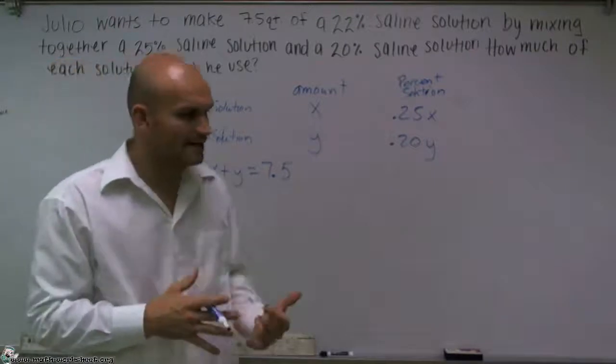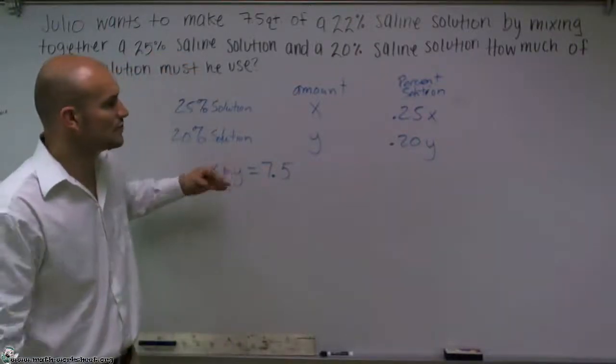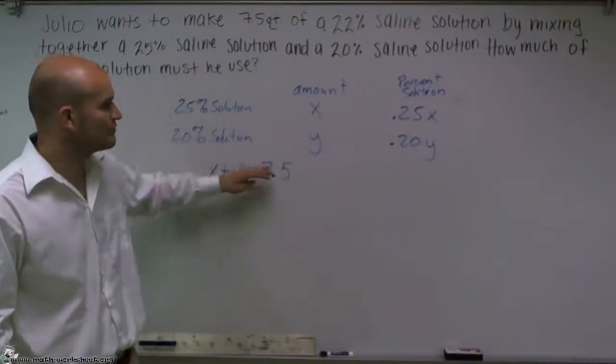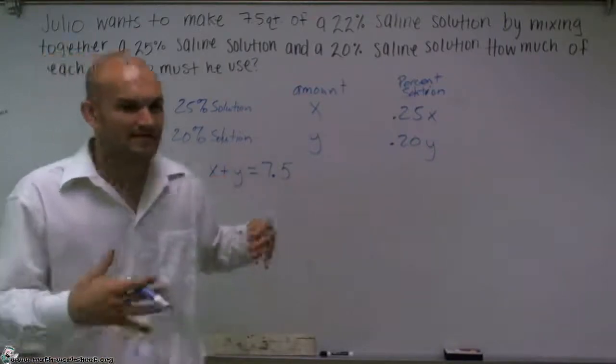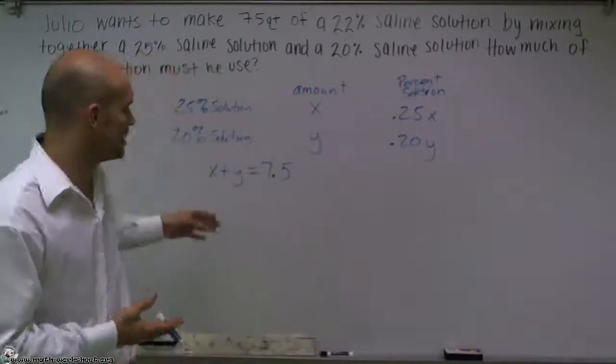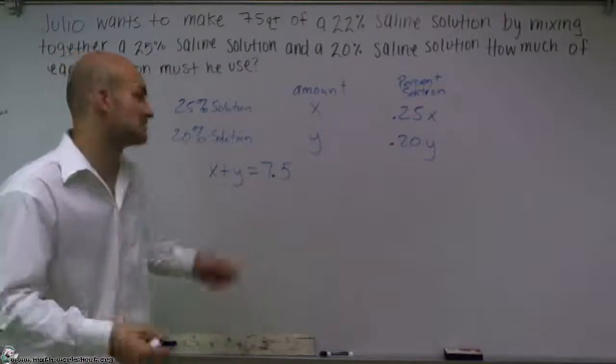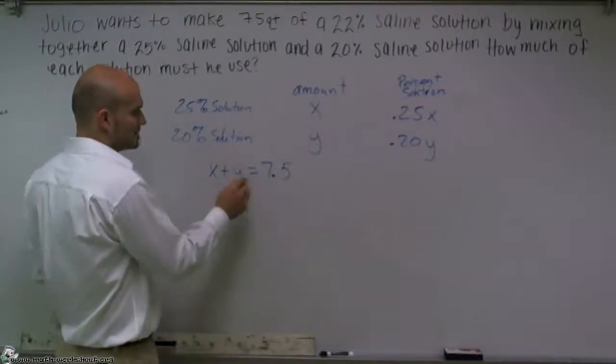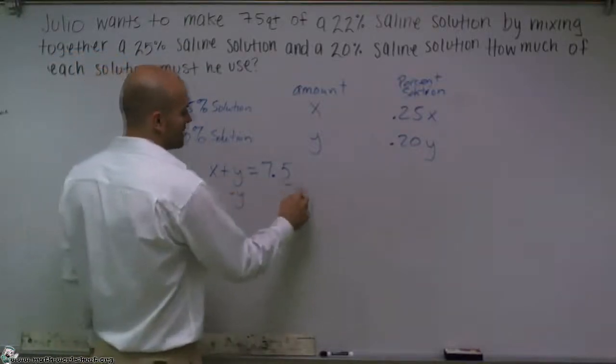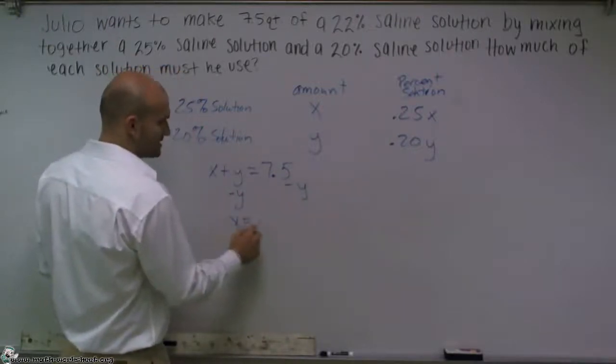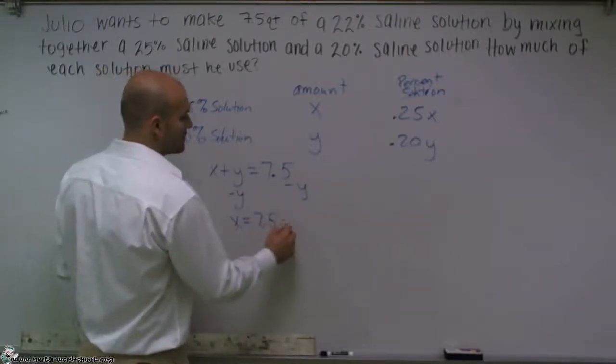Now, what I can do is I can use one of these to get rid of one of my variables. Because it's very difficult to solve for equation when we have two variables, unless we're going to use a system. So what I'll do is I'm going to solve for x by subtracting a y on both sides. So I get x equals 7.5 minus y.